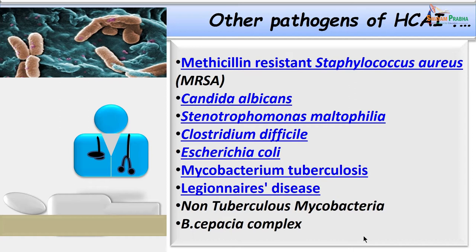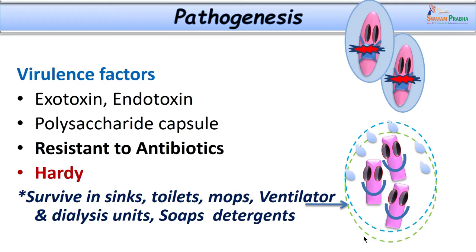Other important organisms causing healthcare associated infections include MRSA causing bacteremia and septicemia especially in catheterized patients, as well as Candida albicans, Stenotrophomonas maltophilia, Clostridium difficile, Escherichia coli, Mycobacterium tuberculosis, non-tuberculous mycobacteria, and Legionella.